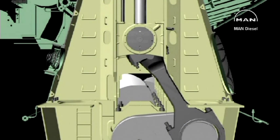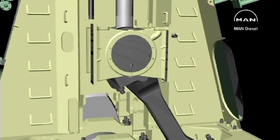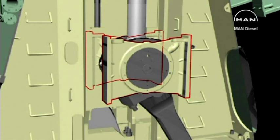This horizontal force must be transmitted to the engine frame, and for this purpose, the crosshead is provided with slideshoes supported on vertical surfaces, the guide bars on the engine frame.